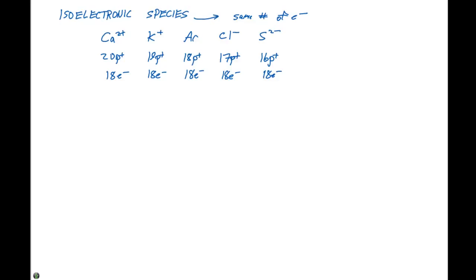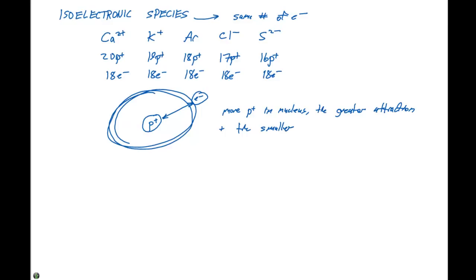So what we can look at here is how the protons in the nucleus will influence the electrons surrounding the nucleus. There's going to be a force of attraction between the protons and the electrons. So the more protons in the nucleus, the greater attraction and the smaller the radii.